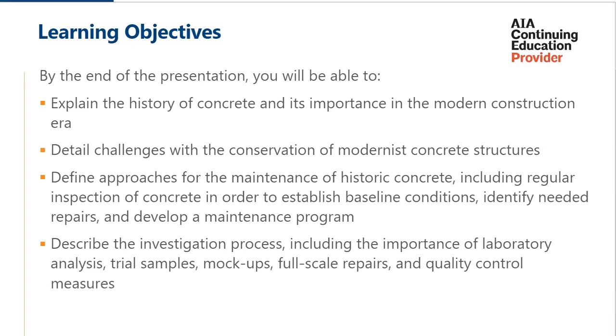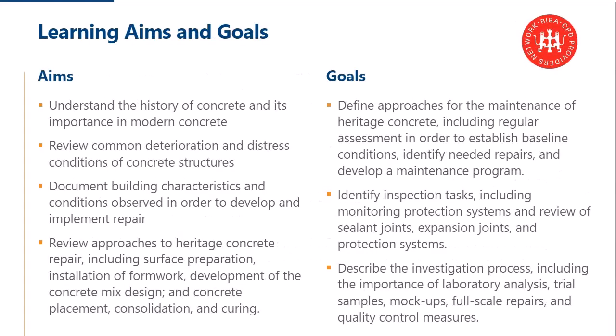Similarly, the REBA aims and goals have four aims: understand the history of concrete and its importance; review common deterioration and distress; document building characteristics and condition; and review approaches to heritage concrete repair, including the various tasks. The goals involve defining approaches for the maintenance and repair of concrete, identifying inspection tasks, and being able to describe the investigation process.